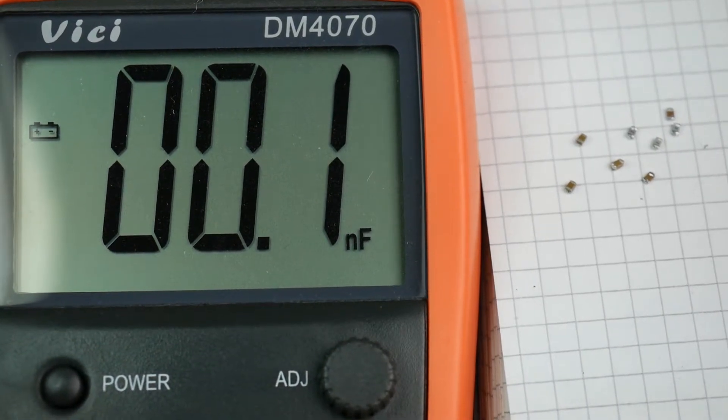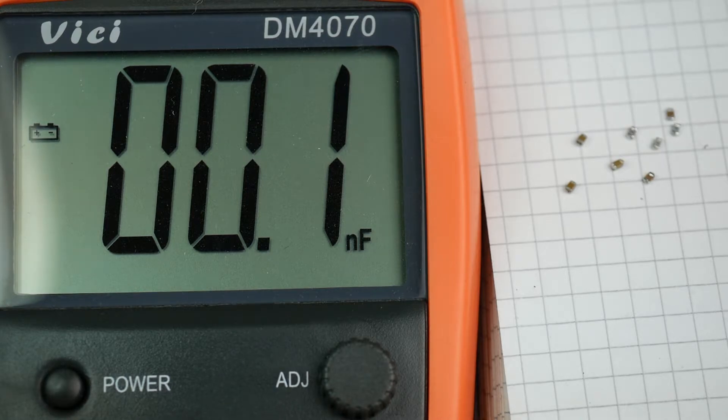This is the VC DM4070 LCR meter. It measures L, inductance, C, capacitance, and R, resistance.